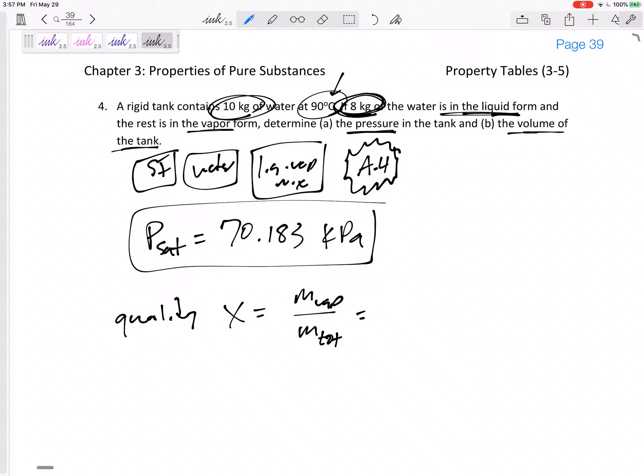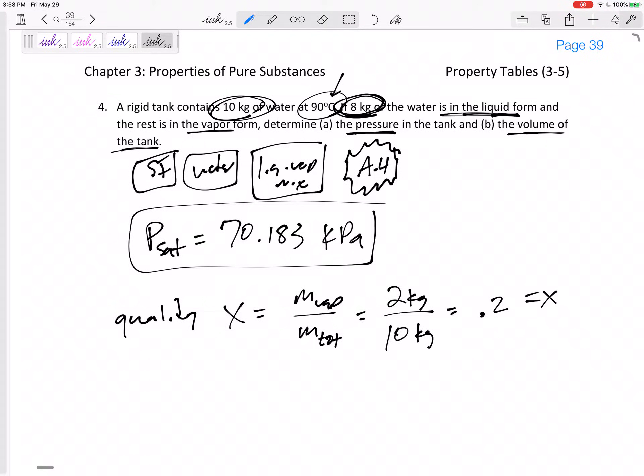Eight kilograms is in the liquid form, so two kilograms is vapor. Didn't explicitly tell us that, but we could figure that out. Over the total, the quality is 0.2. If we have 10 and eight of it is still in water, it only has quality of 0.2. It's 20% of the way in mass of going from liquid to vapor. So quality is 0.2, X is 0.2.